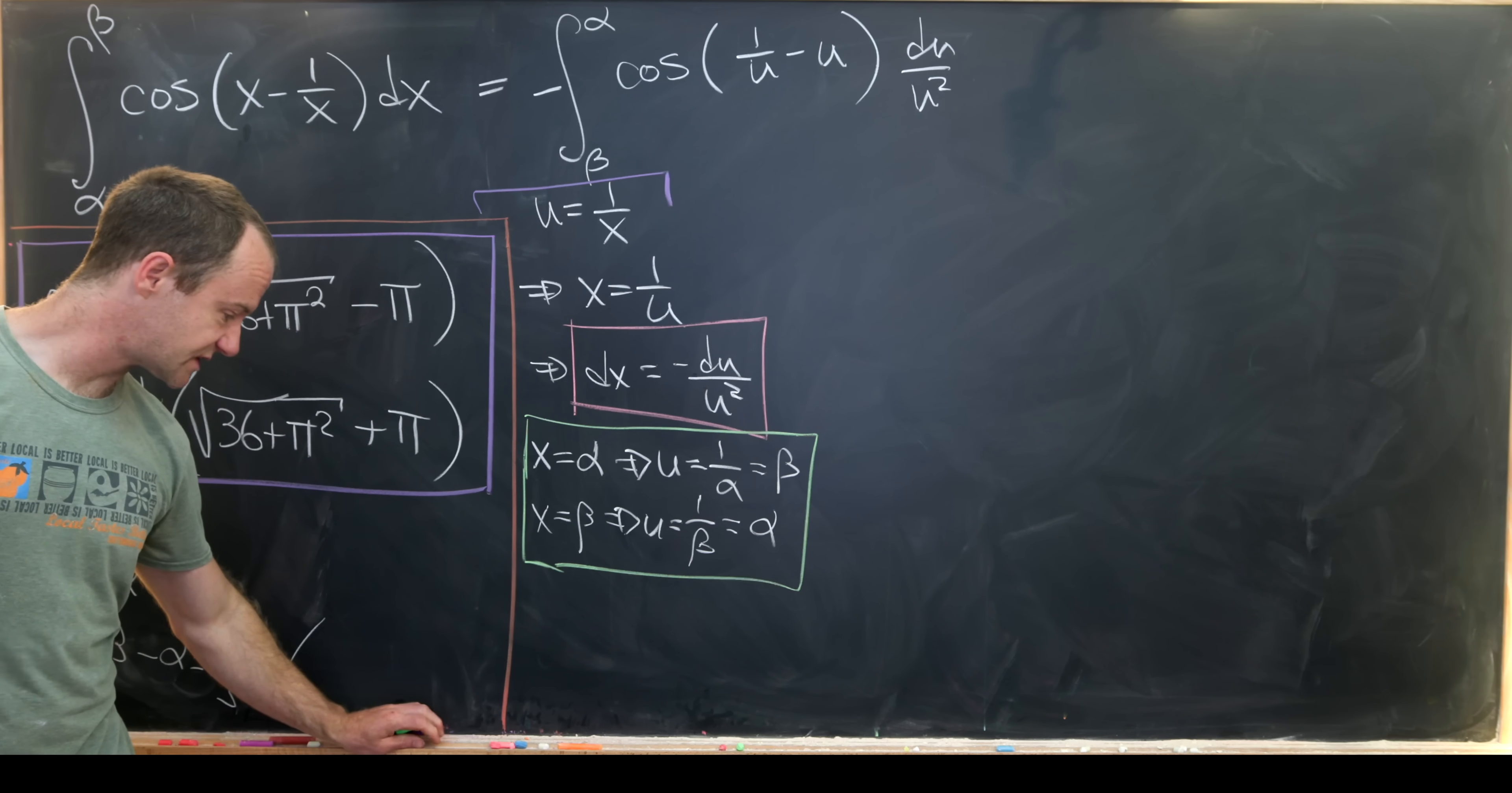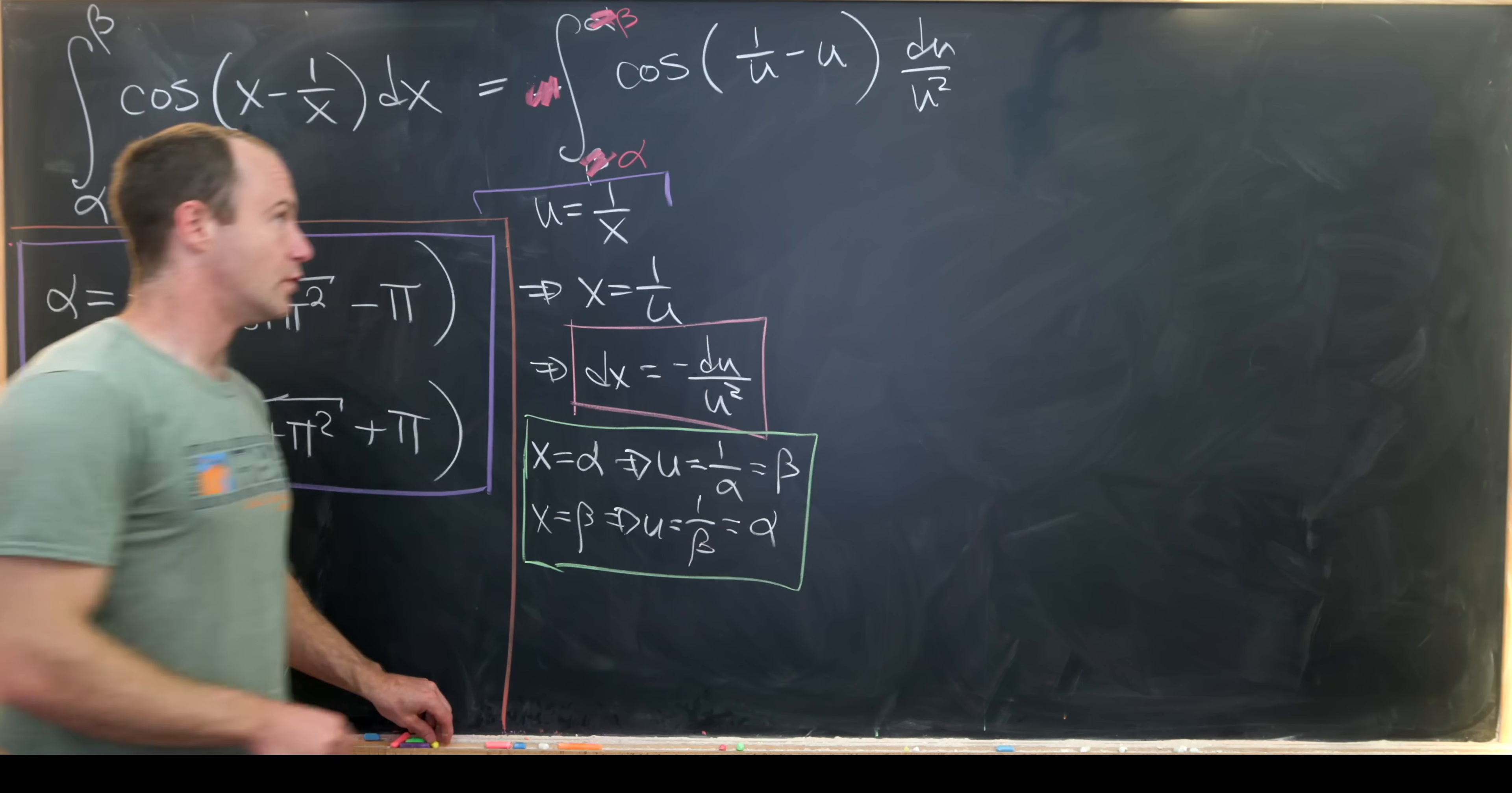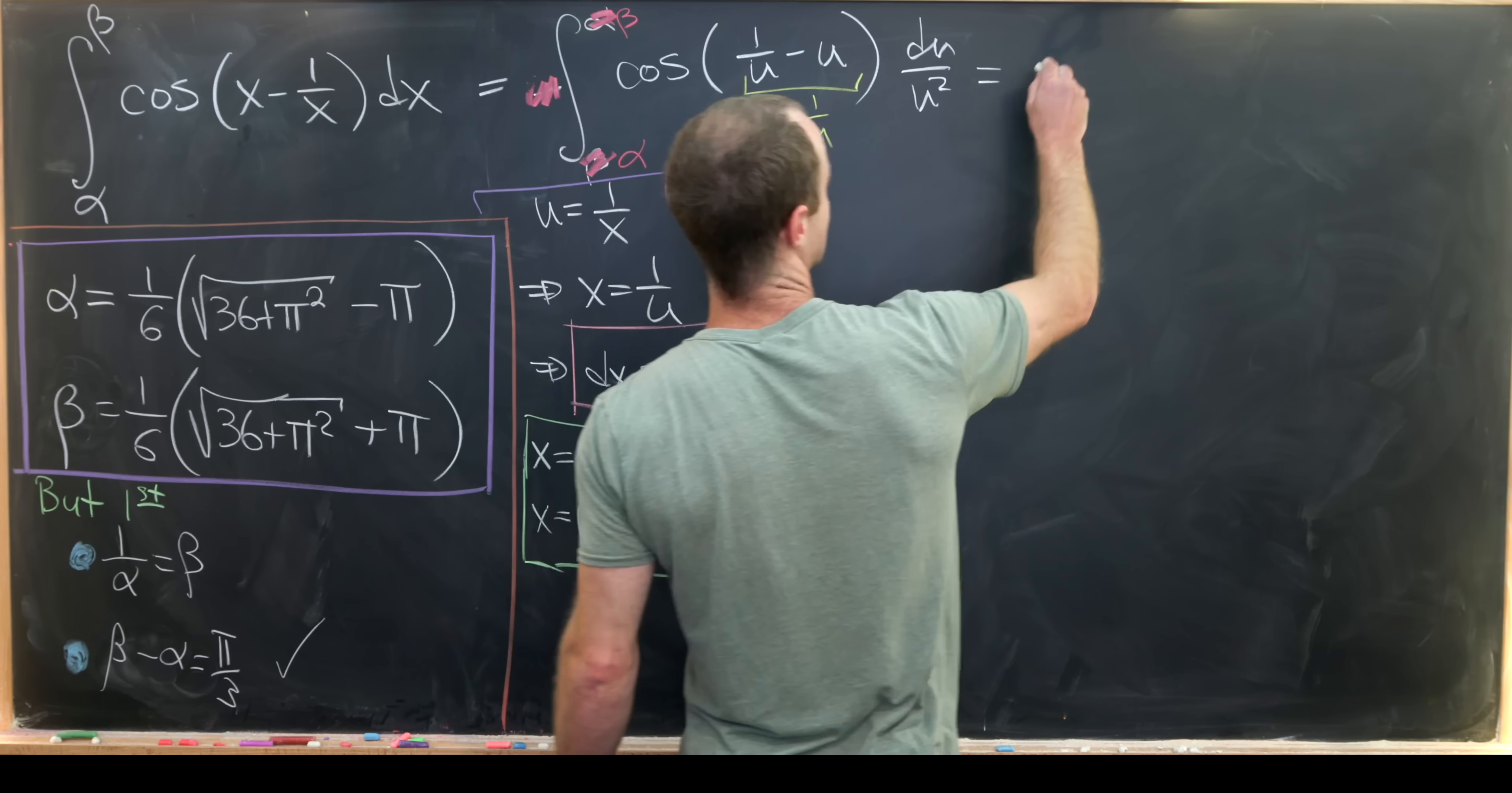And now let's use some properties here. So we know that we can exchange this minus for a plus if we switch the order of integration. So that's going to be alpha to beta. And then furthermore we know that cosine is an even function. Since cosine is an even function we can replace this 1 over u minus u with u minus 1 over u.